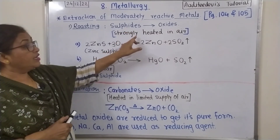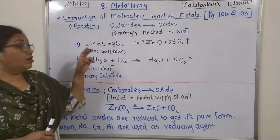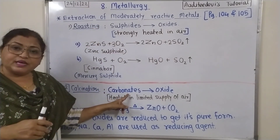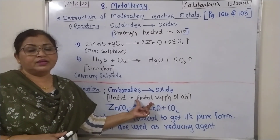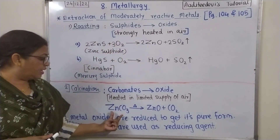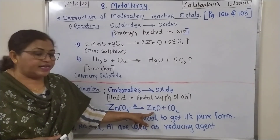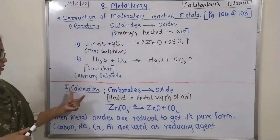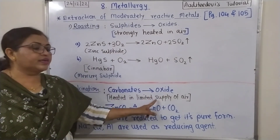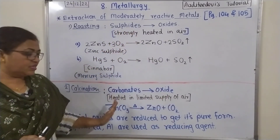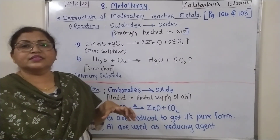Roasting: sulfide ores are strongly heated in plenty of air to get their metal oxides. For carbonate ores of moderately reactive metals, they are also strongly heated, but in a limited supply of air. By heating the carbonate ore directly, we get the metal oxide again — for example, zinc carbonate gives zinc oxide.